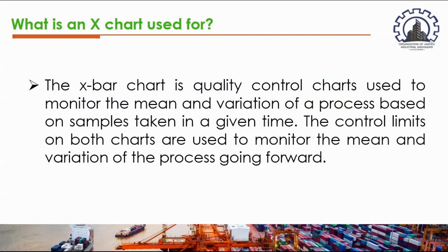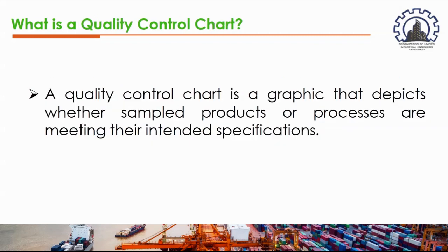The X-bar chart is a quality control chart used to monitor the mean and variation of a process based on samples taken at a given time. The control limits on both charts are used to monitor the mean and variation going forward. A quality control chart is a graphic that depicts whether sample products or processes are meeting their intended specifications.